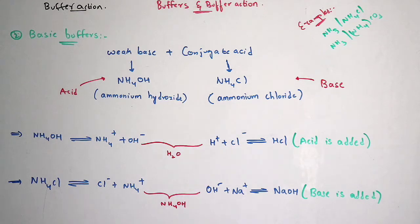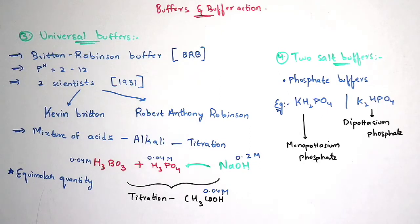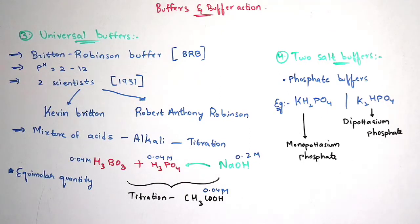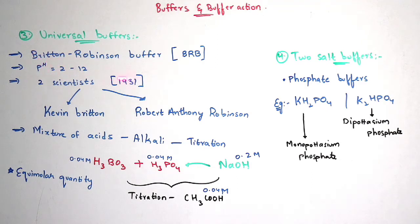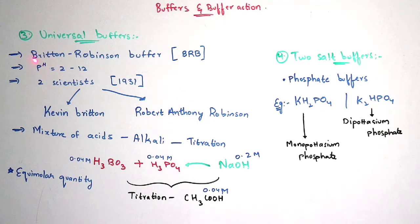Now let us discuss about universal buffers. Britton-Robinson buffer is one of the best examples, abbreviated as BRB. The pH of Britton-Robinson buffer is 2 to 12. It is named after two scientists — Robert Anthony Kevin Britten and Robert Anthony Robinson — who discovered this universal buffer in 1931.